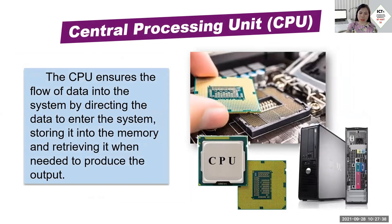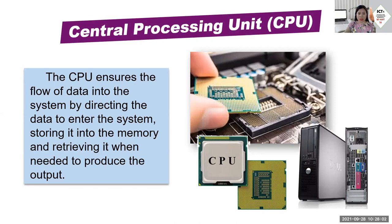The central processing unit ensures the flow of data into the system by directing data to enter the system, storing it in memory, and retrieving it when needed to produce output. Inside the motherboard, the CPU performs the processing every time we input data into the computer, producing meaningful results.